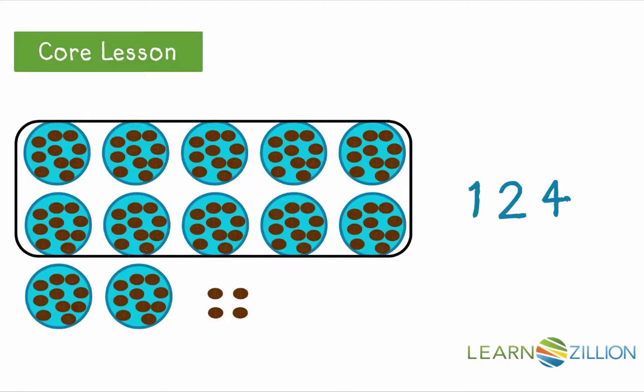Remember in this three digit number, each digit has its own place value. The digit one is in the hundreds place, letting us know that there is one group of hundreds. The digit two is in the tens place, letting us know that there are two groups of tens. The digit four is in the ones place. That lets us know that we have four ones.